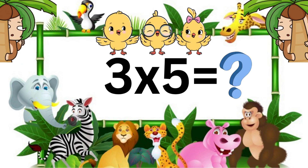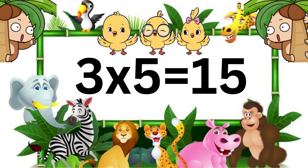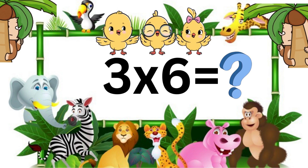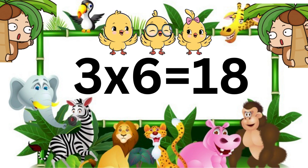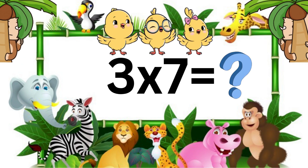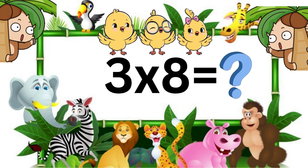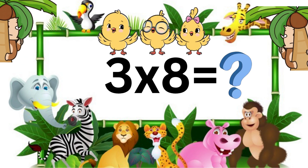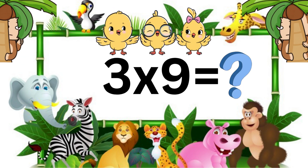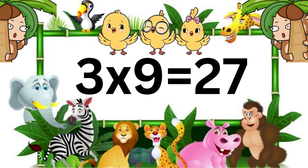Three five's are fifteen. Three six's are eighteen. Three seven's are twenty-one. Three eight's are twenty-four. Three nines are twenty-seven.